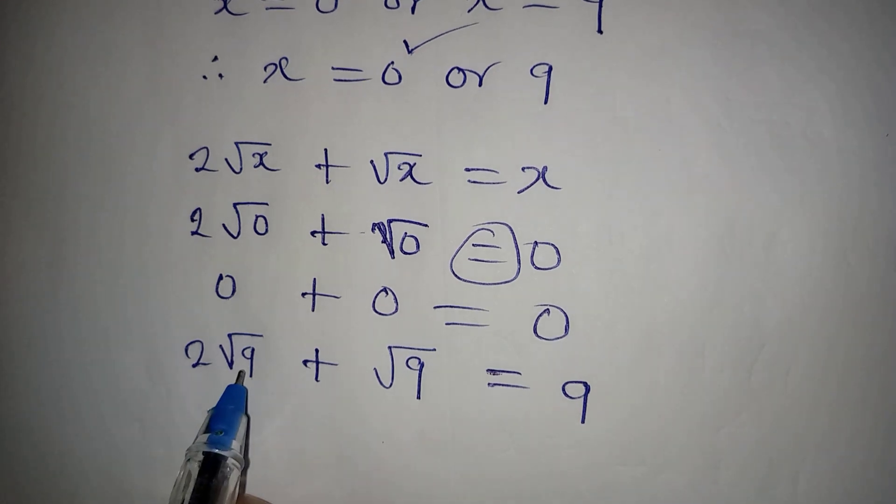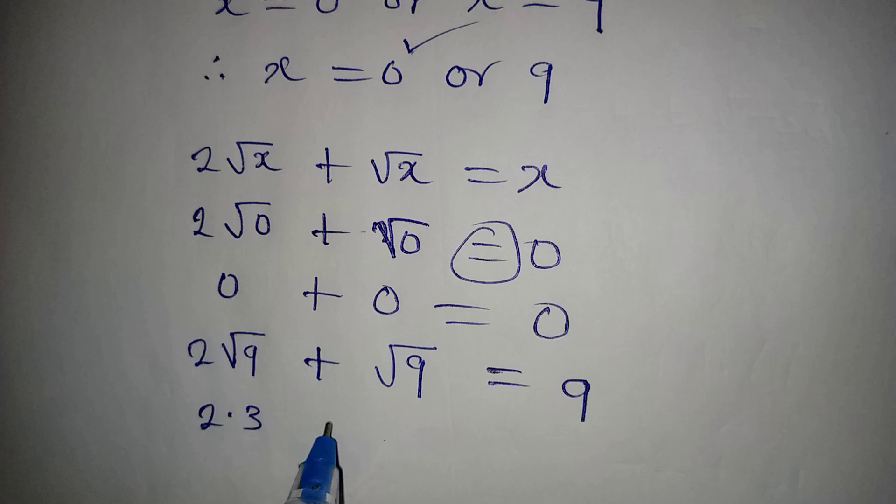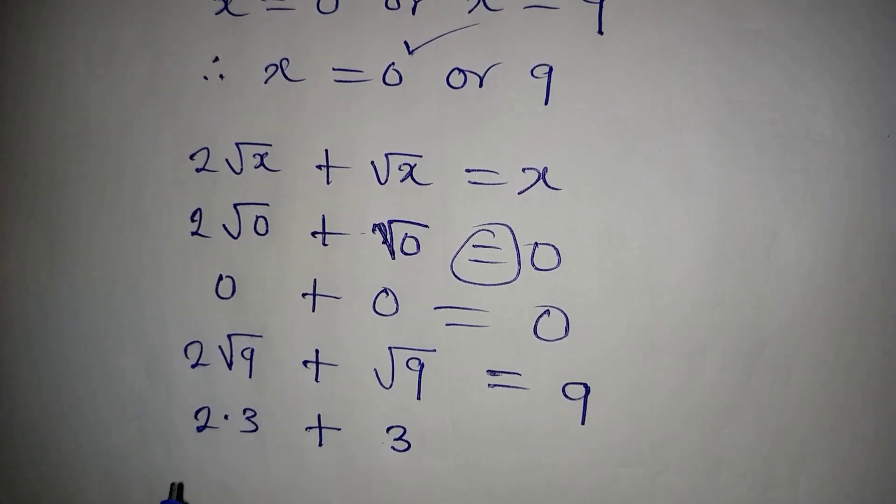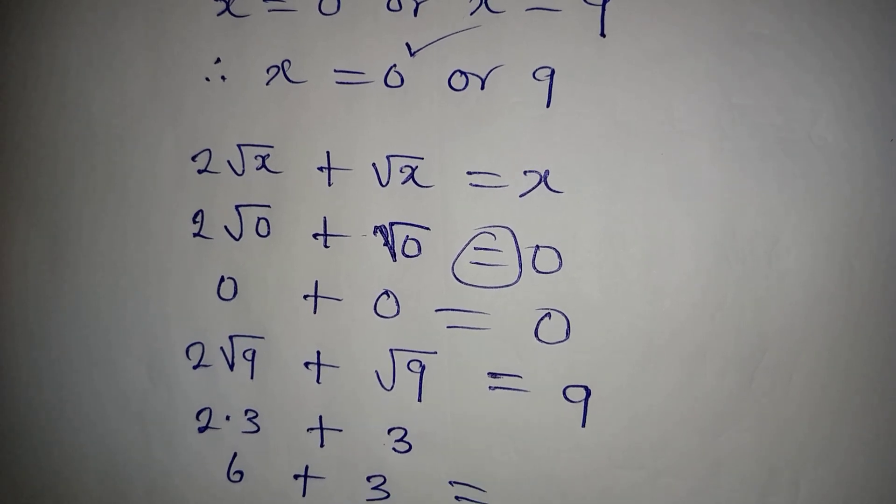Now what do we do? This is 3 because √9 is 3. We have 2 times 3 plus √9 is still 3. Now 2 times 3 is 6, we have 6 plus 3, and that is definitely 9.